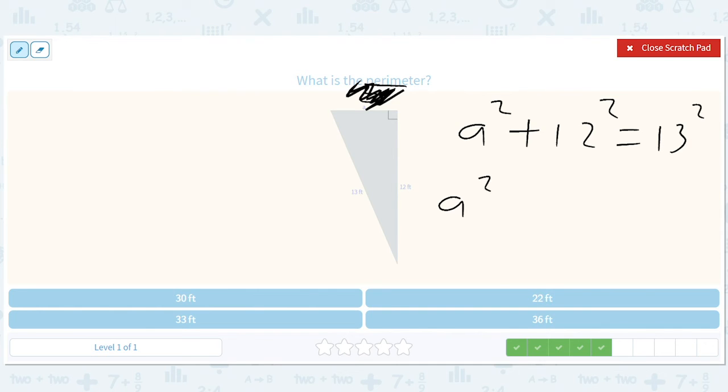So this gives us a squared plus 144 equals 169, which gives us that a squared, when you subtract 144 from 169, you get 25, which gives you a equals 5.